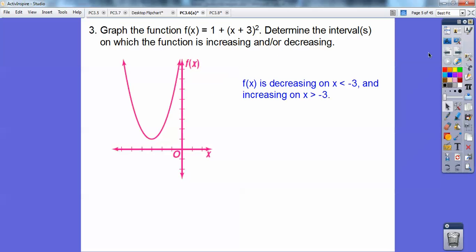And then finally, graph this guy. Remember, y equals x squared would be a parabola right here. This says move it to the left 3 and up 1. So move that parabola to the left 3, up 1. There it is. Determine on which intervals it's increasing and decreasing. This guy is decreasing when x is less than negative 3 and increasing when x is greater than negative 3.